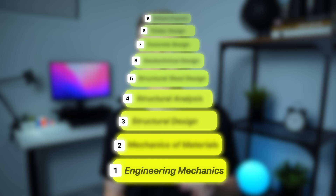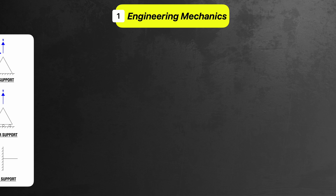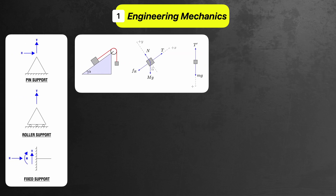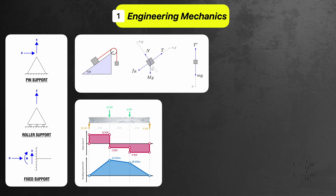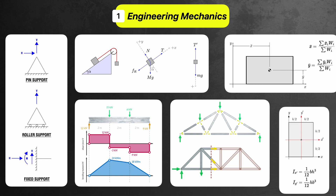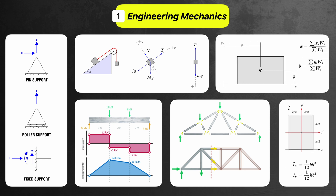To get started learning structural engineering, the first topic you'll need to get your head around is engineering mechanics. You're going to want to focus on understanding things like how different support types work and what reactions they provide, how to draw and solve free body diagrams, how to sketch shear force and bending moment diagrams and how these diagrams change under different loading and support arrangements, how to solve trusses using the method of joints and the method of sections, and how to calculate different section properties like the centroid and the second moment of area. As this is the first topic, these concepts really are the foundation of everything you do later on.